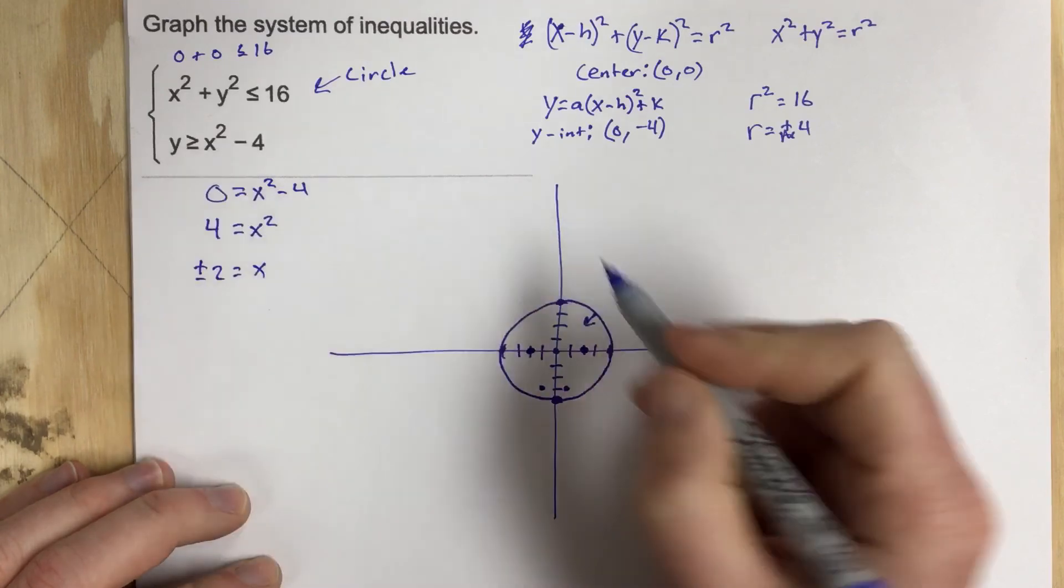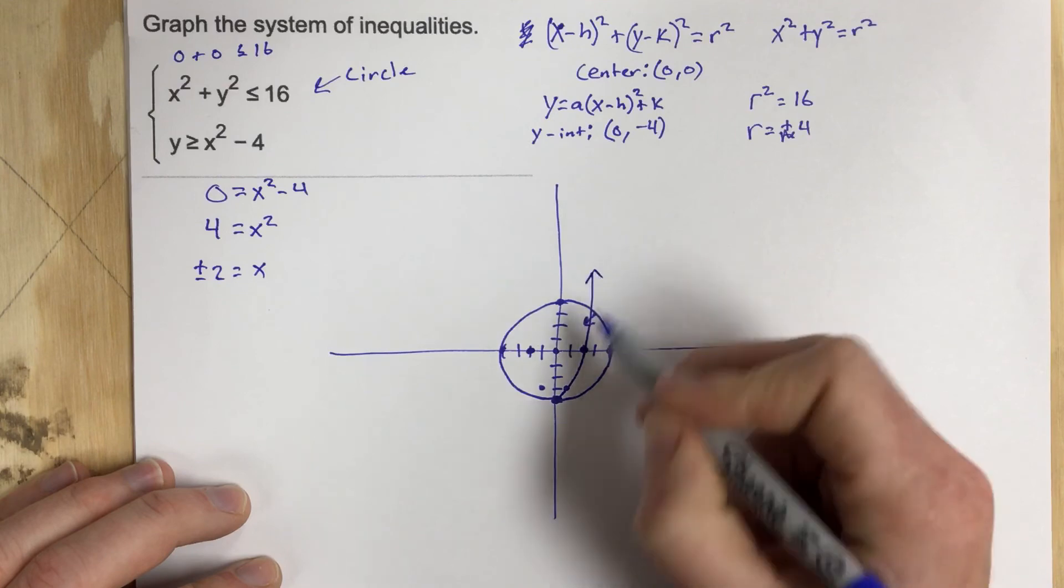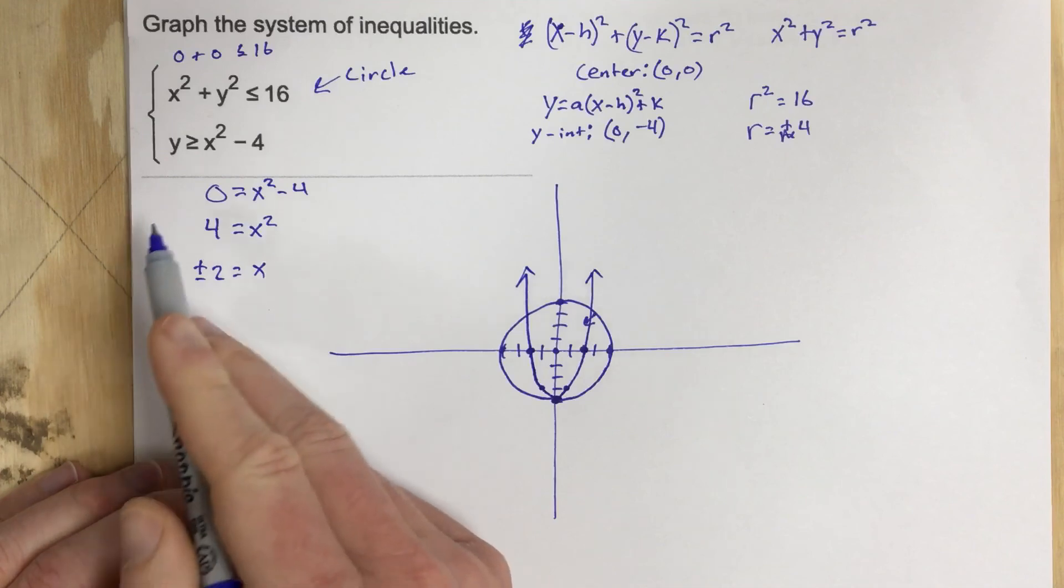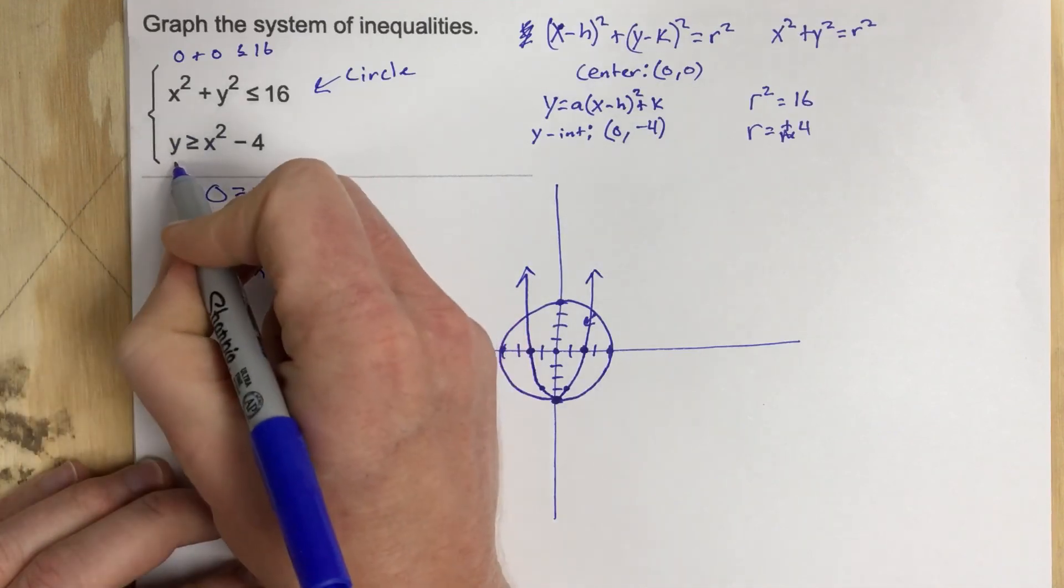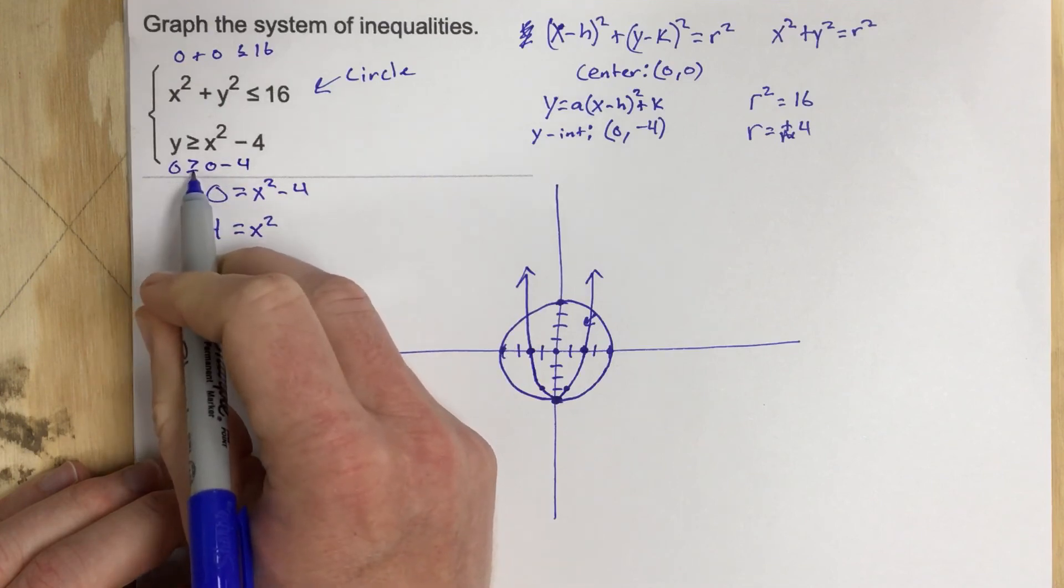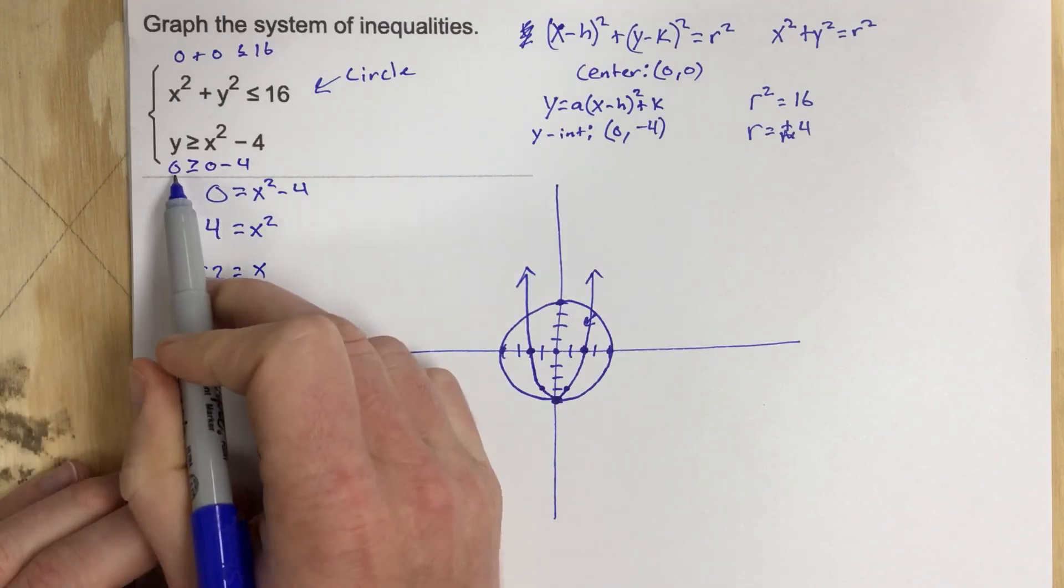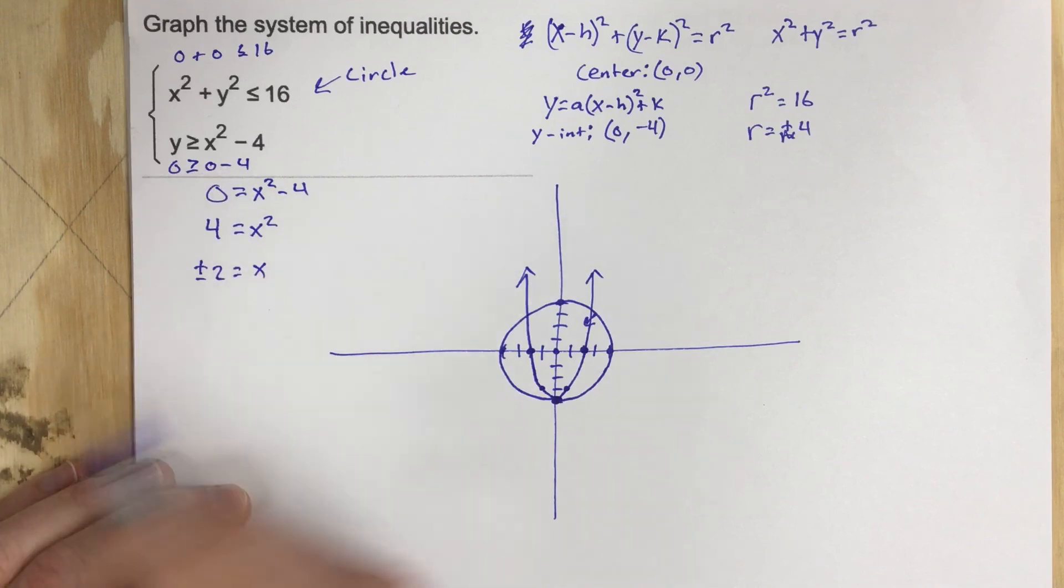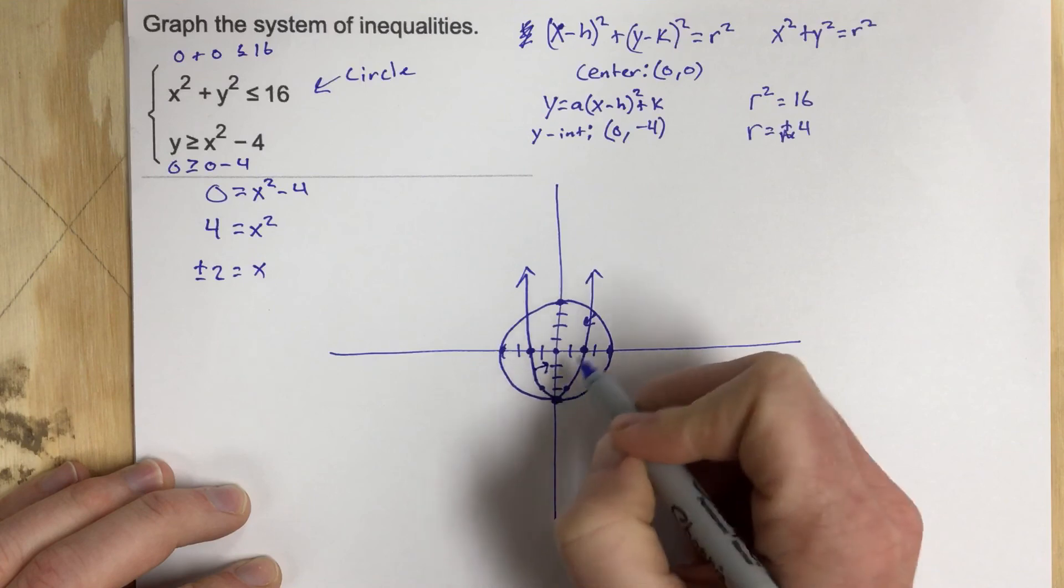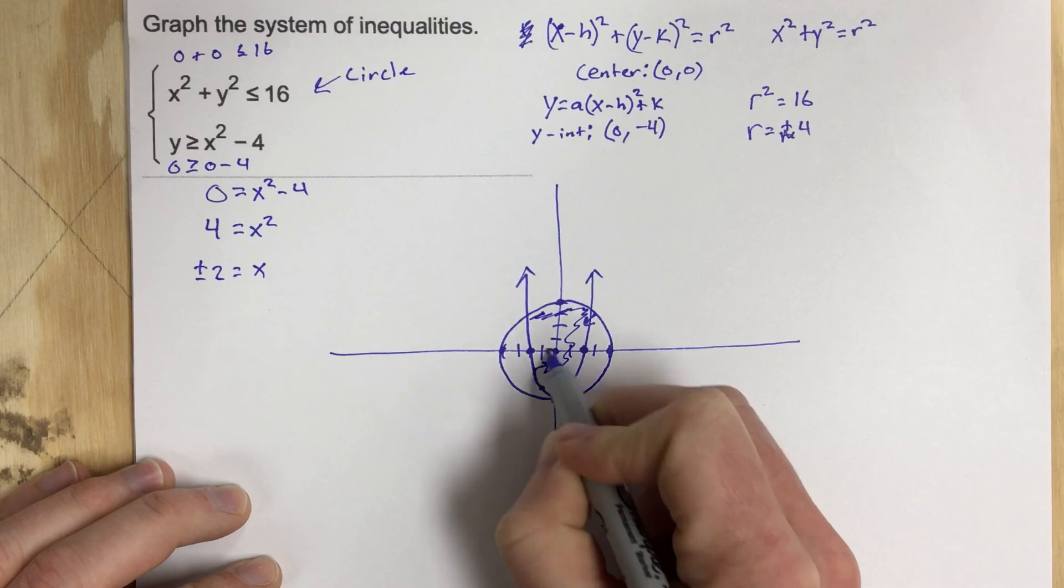And this is a bold line. So I can go ahead and draw this quadratic up like so. Draw it here as well. And then I can determine using 0, 0, 0 greater than or equal to 0 minus 4. 0 is greater than negative 4. So because 0 is greater than negative 4, that means 0, 0 is a solution. So we're going to be shading inside here. Well, you notice the circle's in here. This is in here. We're shading this area right there.